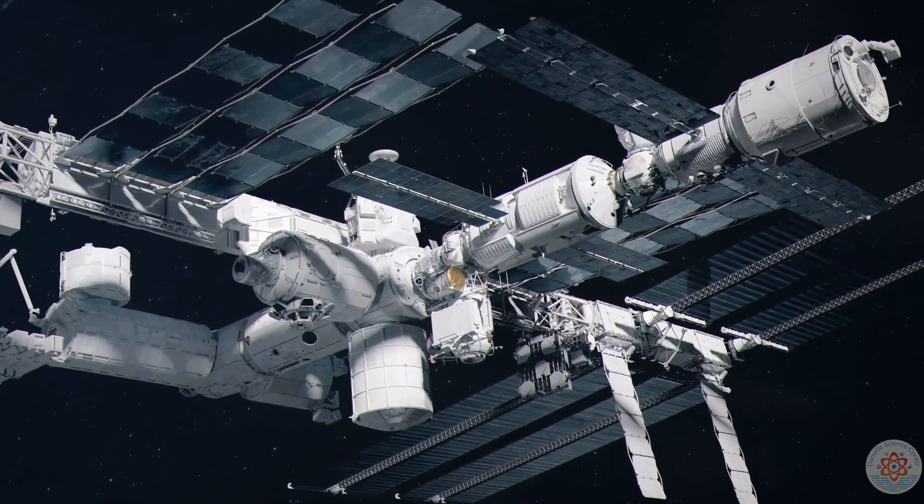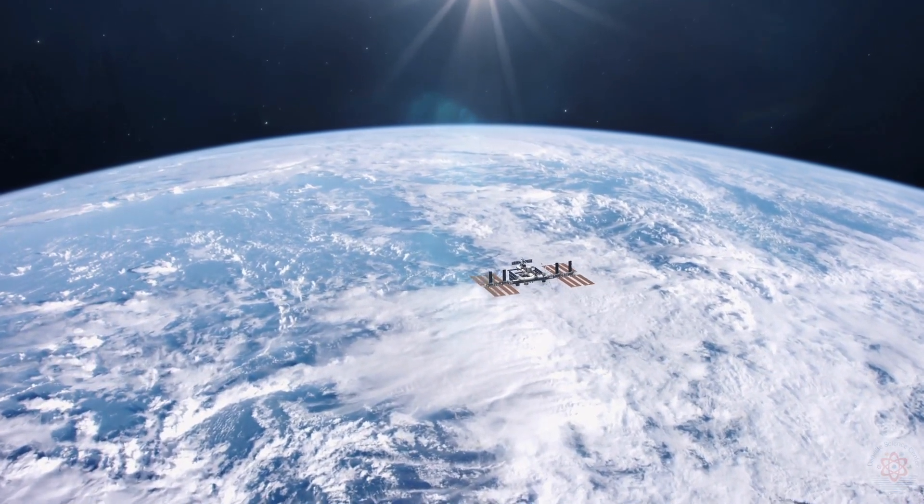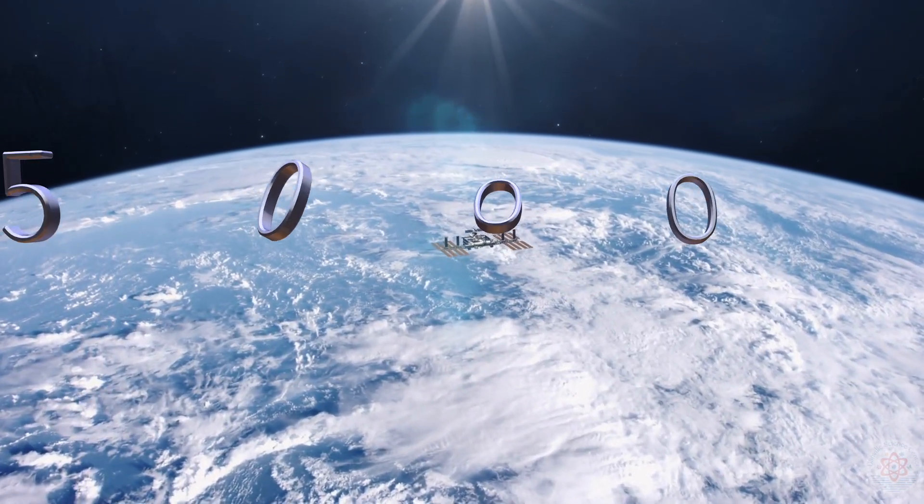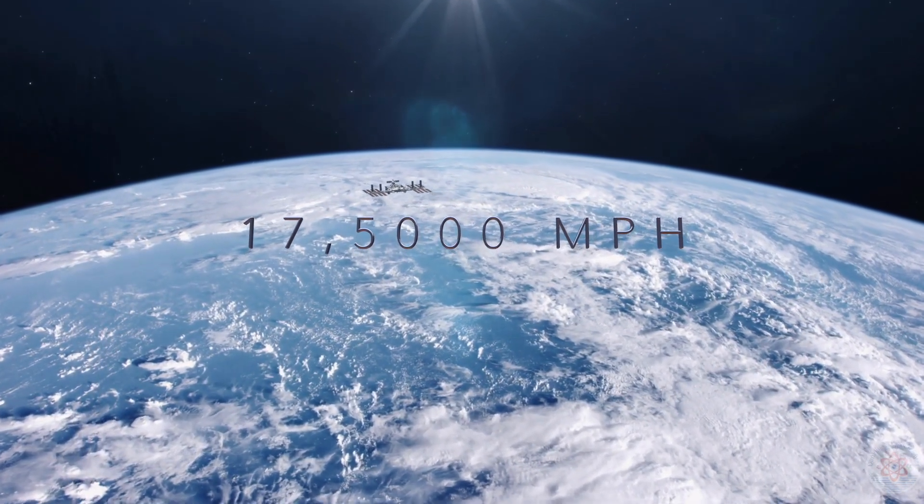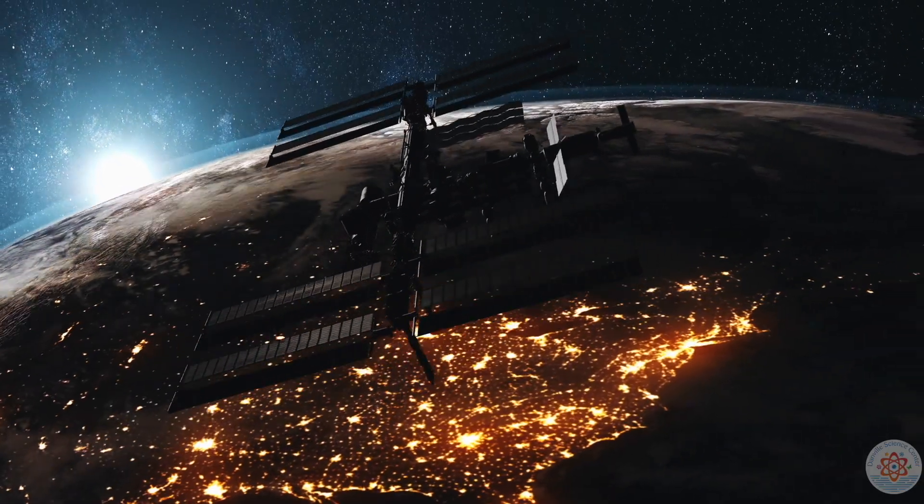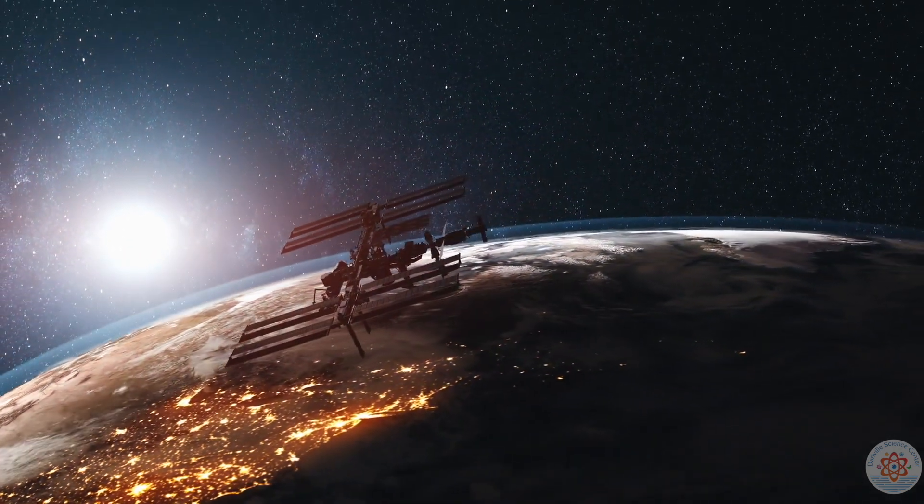The International Space Station averages six complete Earth orbits every day. Traveling at 17,500 miles per hour means that if you do catch a glimpse of the ISS it will be a brief one. The next time the space station will pass over Danville is this Thursday morning at 6:19 AM for a period of four minutes.